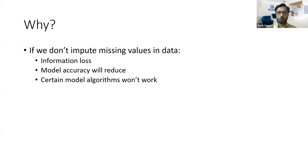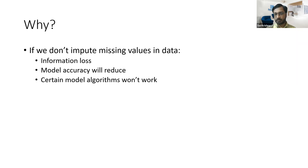So what is the reason why do we have to impute the missing values? If you don't impute missing values, then that would be a loss of information. For example, if most of your values in a particular variable are missing, then you eliminate that variable entirely, and that is an information loss. When you do this, the accuracy of the model will reduce.